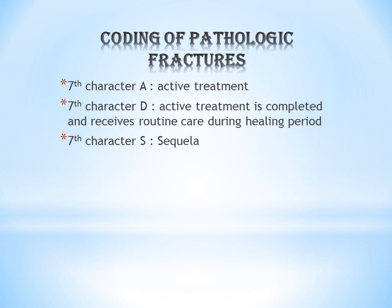So seventh character A is for active treatment, D is for routine care. The next common seventh character is S, which stands for sequelae — the late effect or consequence. For example, a patient previously had a nasal septum fracture which healed, but as a consequence, the patient currently has a deviated nasal septum. That deviated nasal septum is the sequelae of the nasal septum fracture, so the seventh character S is assigned.